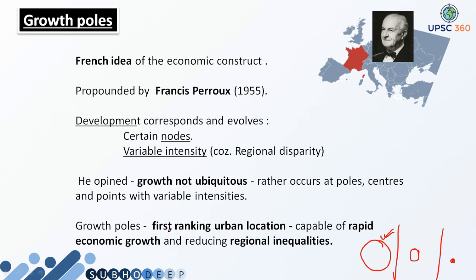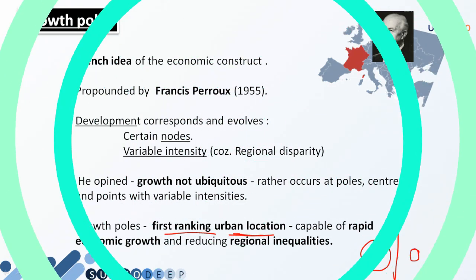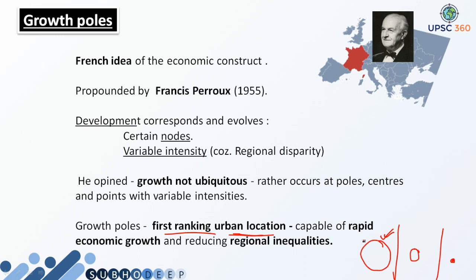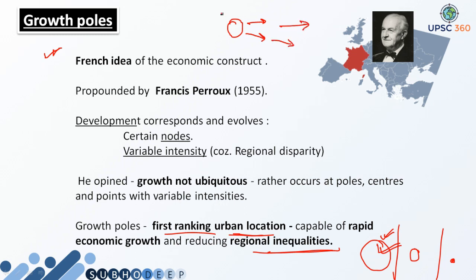Growth poles are always kept at first-ranking urban locations because it is a much bigger region with rapid economic growth prospects, and it helps hugely in reducing regional inequalities. He took the concept of propulsive industries — wherever there is a growth pole, he assumed there is probably a propulsive industry. The nature of a propulsive industry is that if that industry is developed, it makes sure the benefits spread into different other arenas as well. A very good example is the IT industry — compare India ten years ago and India now. There has been a huge revolution in the IT sector.